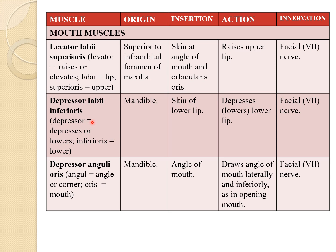The next is the depressor labii inferioris. 'Depressor' means it lowers or depresses, and 'inferioris' means lower. Its site of origin is the mandible and it inserts at the skin of the lower lip. Its action is to depress the lower lip. It is also innervated by the facial nerve.